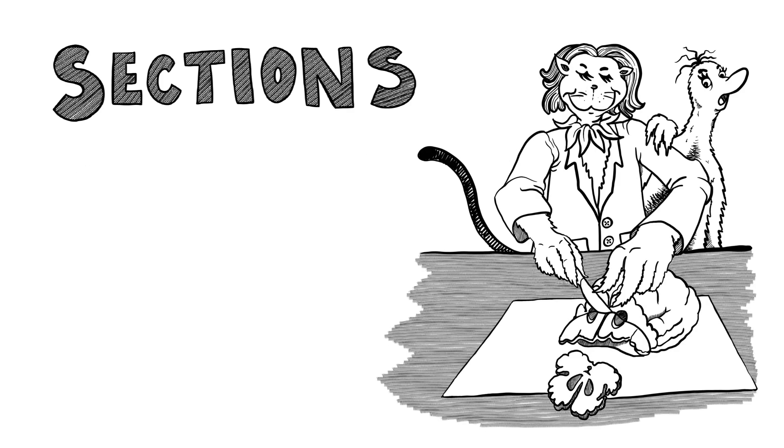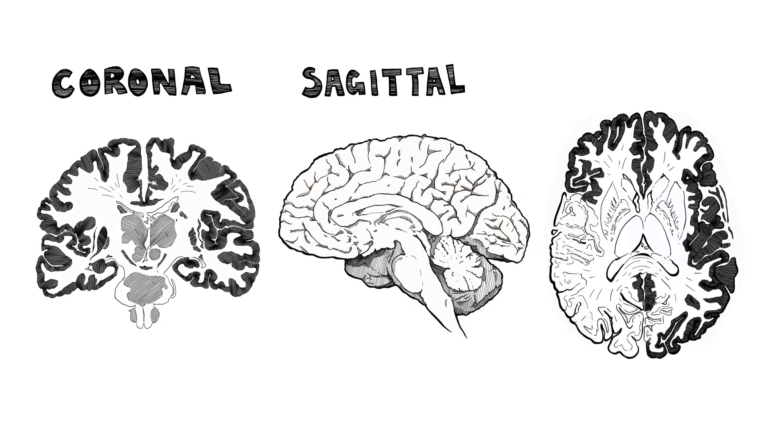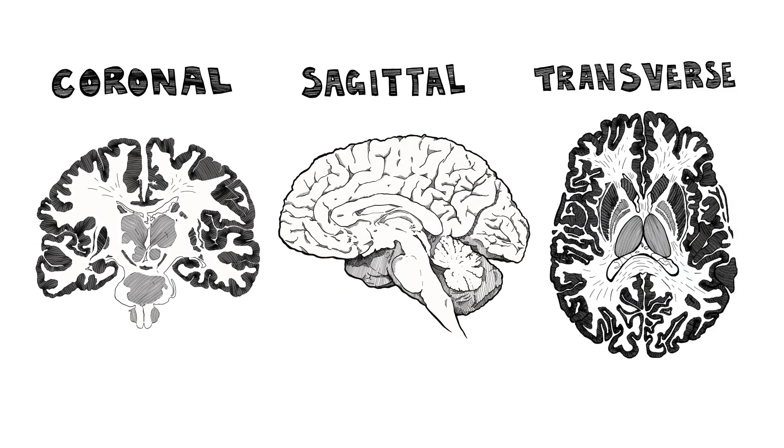We examine the brain in sections — coronal and sagittal, as well as the transverse, which is also called horizontal.